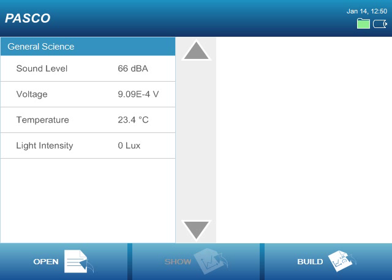Notice that the readings for these measurements are all live. This means that one of the four ways we can use the Spark Science Learning System is as a portable meter. Simply connect a sensor and stay at the home screen to view the measurements from that sensor.